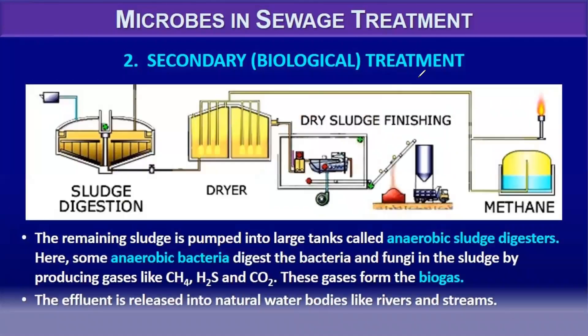The remaining sludge is pumped into large tanks called anaerobic sludge digesters. Here, anaerobic bacteria digest the bacteria and fungi in the sludge, producing gases like methane, H₂S, and carbon dioxide. These gases form the biogas. The treated effluent is then released into natural water bodies like rivers and streams.